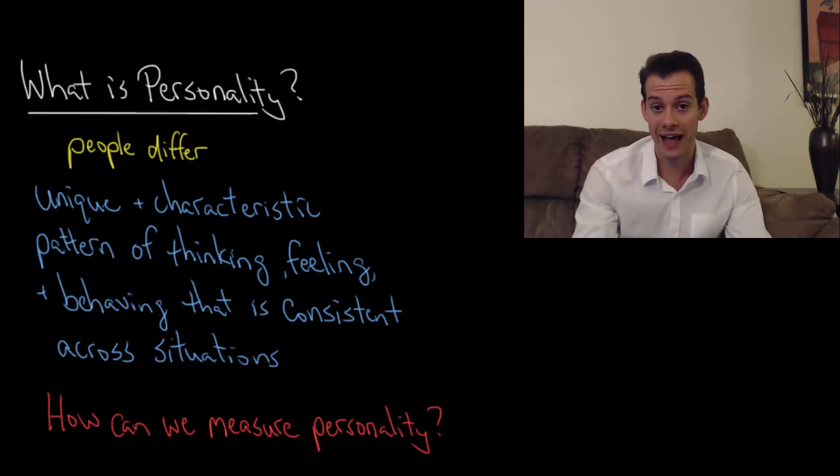Now we might ask what is personality? Just like intelligence you probably have a common sense understanding of the term but we're going to need to have a more precise definition. So we can say that people differ, that seems obvious, there are differences between people. And when we think about personality what we're really referring to is that people have unique and characteristic patterns to their thinking, feeling and behaving. And we want these patterns to be consistent across situations because when we find a pattern that's consistent that means it's something about the person, it's not the situation that's causing those behaviors.